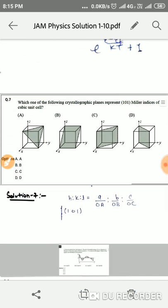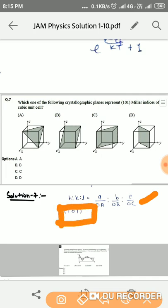Moving to the seventh question, we are given a crystallographic plane and we have been asked which plane is representing (101). Since we know the formula to find the Miller indices and since it is a cubic crystal, A will be equal to B will be equal to C. Since we have to check for (101), OA will be A and OC will be equal to A.